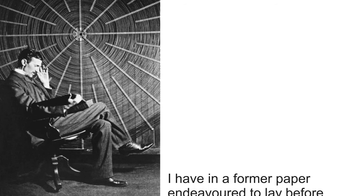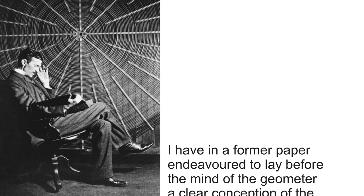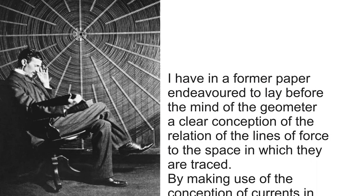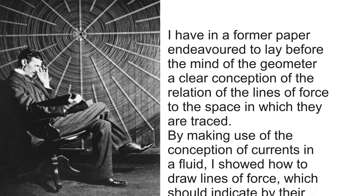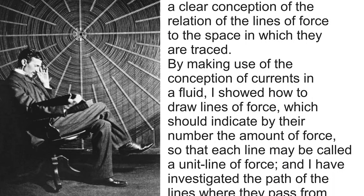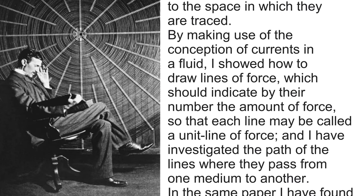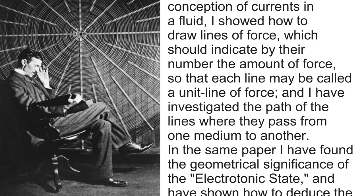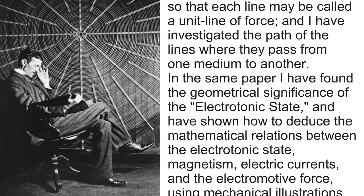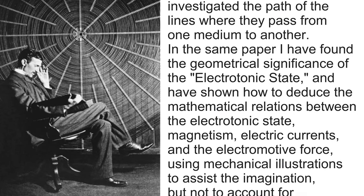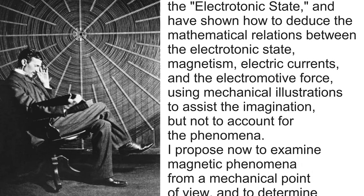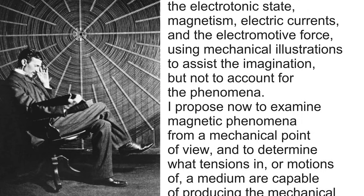I have in a former paper endeavoured to lay before the mind of the geometer a clear conception of the relation of the lines of force to the space in which they are traced. By making use of the conception of currents in a fluid, I showed how to draw lines of force which should indicate by their number the amount of force, so that each line may be called a unit line of force, and I have investigated the path of the lines where they pass from one medium to another. In the same paper I have found the geometrical significance of the electrotonic state, and have shown how to deduce the mathematical relations between the electrotonic state, magnetism, electric currents, and the electromotive force, using mechanical illustrations to assist the imagination, but not to account for the phenomena.